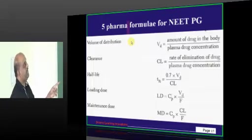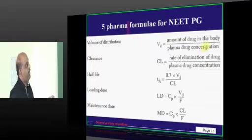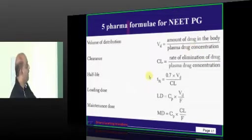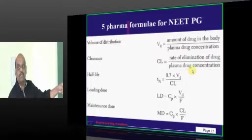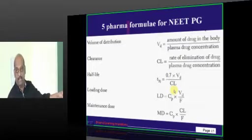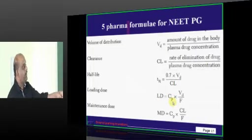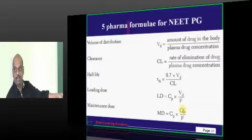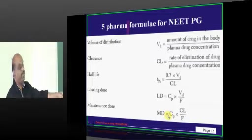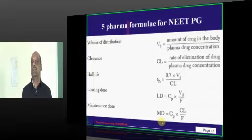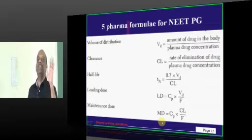Volume of distribution equals amount of drug in the body divided by plasma drug concentration. Clearance equals rate of elimination divided by plasma drug concentration. Half-life equals 0.7 times volume of distribution divided by clearance. Loading dose equals plasma concentration times volume of distribution divided by bioavailability. Clearance divided by bioavailability times peak plasma concentration gives you maintenance dose. This you have to be 100% sure about.